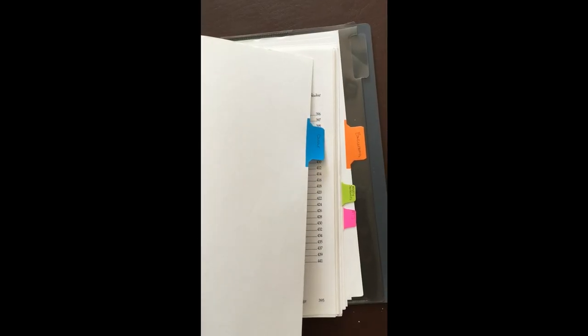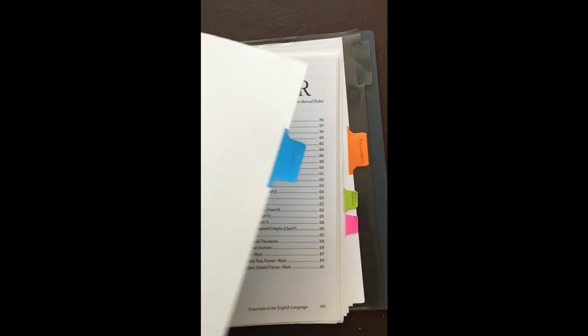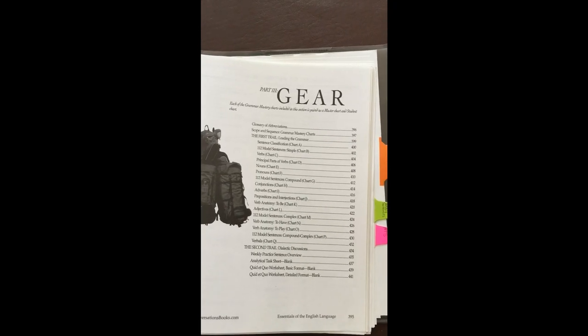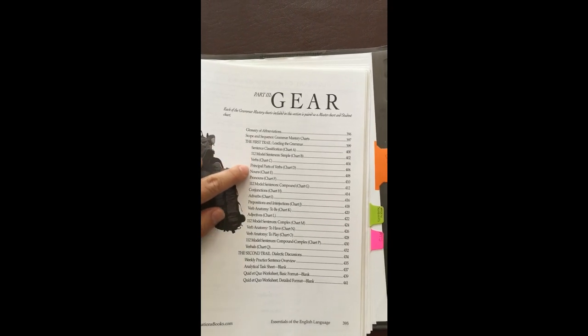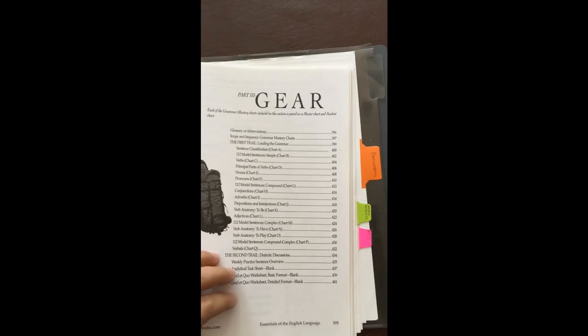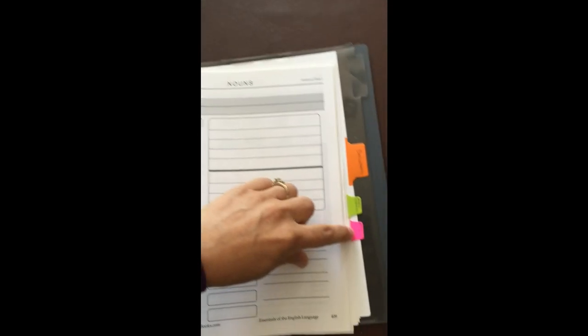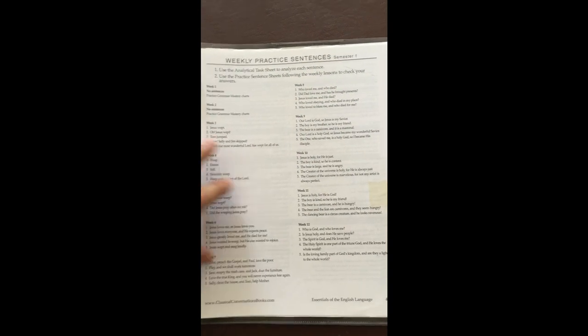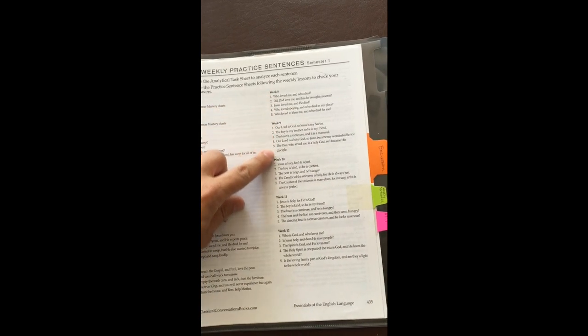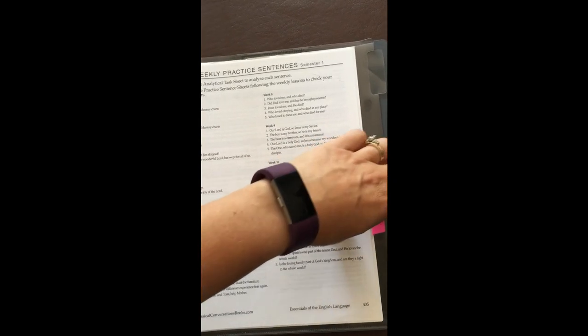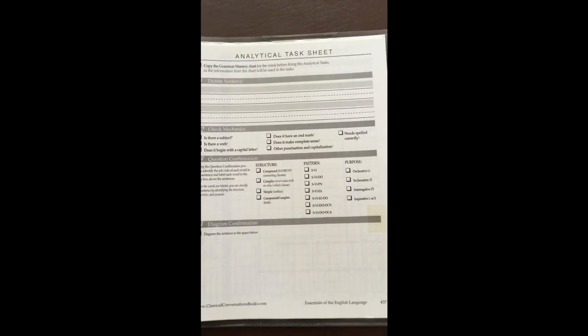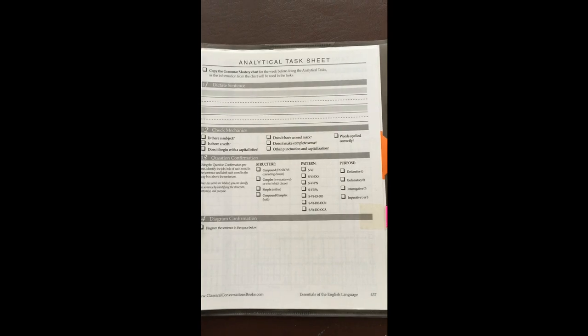After the week tabs, the next section is the Gear. The Gear contains all of the charts and memory work that you and your students will be working on for good discussions about our language. Within the Gear is page 435, the weekly practice sentences — every week there are five sentences available for you to look at, analyze, diagram, and run through the analytical task sheet on page 437.